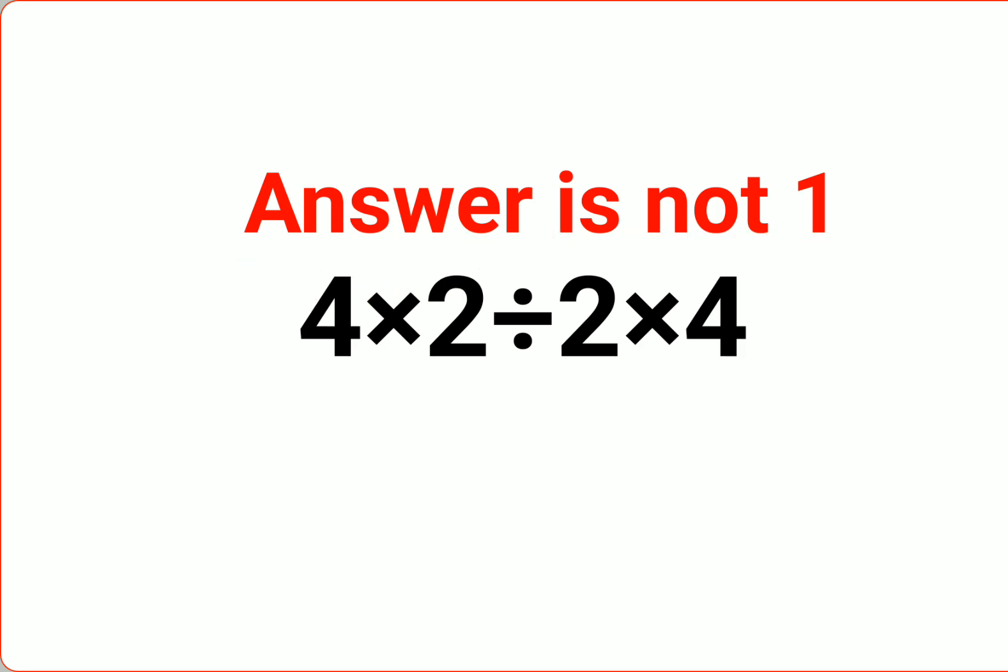A lot of people think that this is so easy. Like we will do 4 into 2 that is 8, divide, we will keep the division as it is, and then we will do 2 into 4 which is 8. That is why they got the answer is 1.